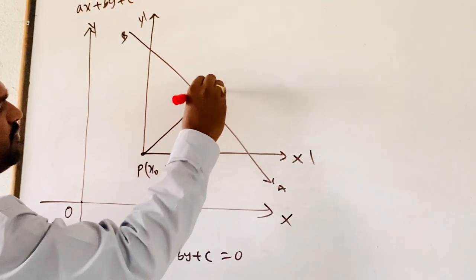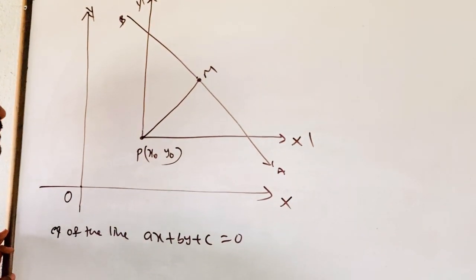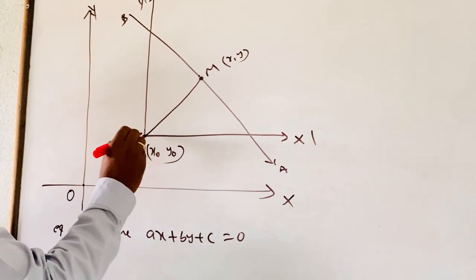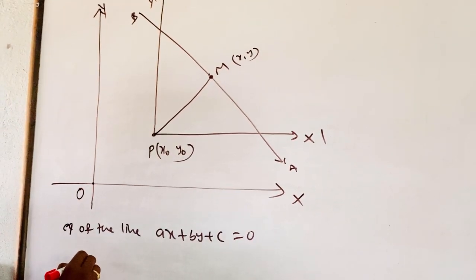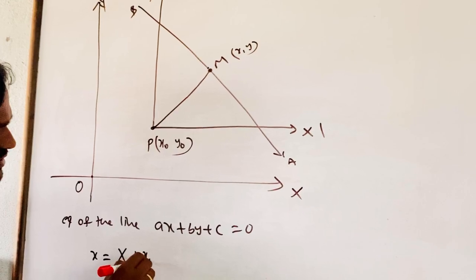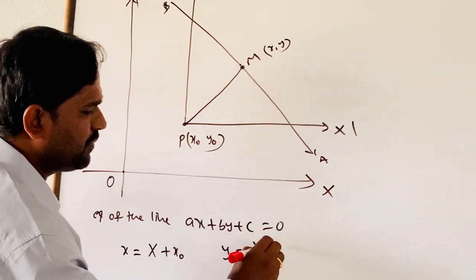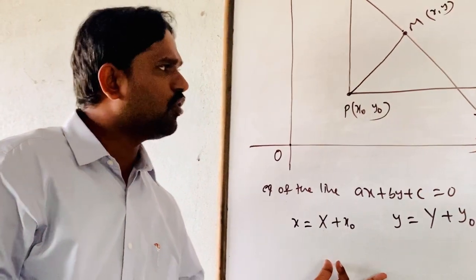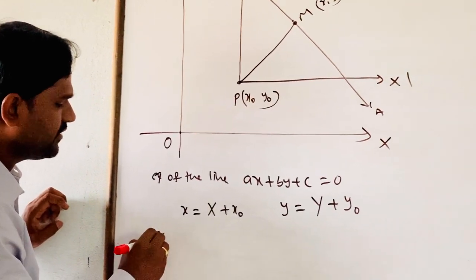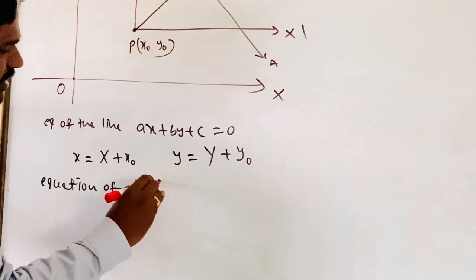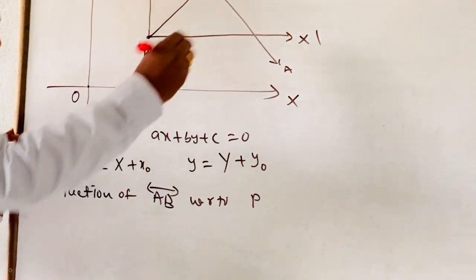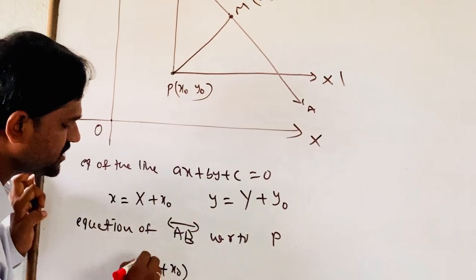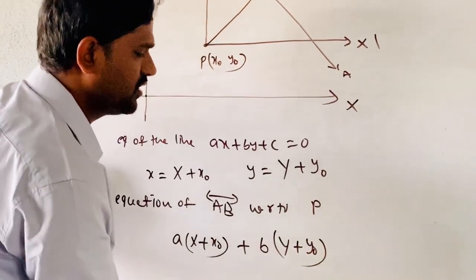Let us draw a perpendicular from P to the line, and consider the foot of perpendicular as M with coordinates (X, Y). Then by the transformation, with origin changed to P, the coordinates of M also change. So X equals capital X plus X naught, and Y equals capital Y plus Y naught, which gives us the new coordinates of X and Y. With respect to the new coordinates, by substituting the values in the given line, the equation of line AB with respect to P on the axis gives us a new equation.